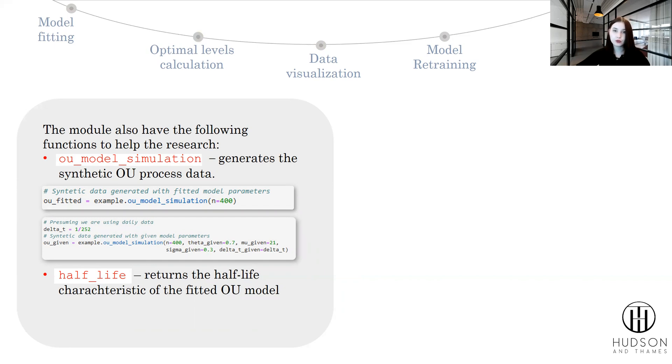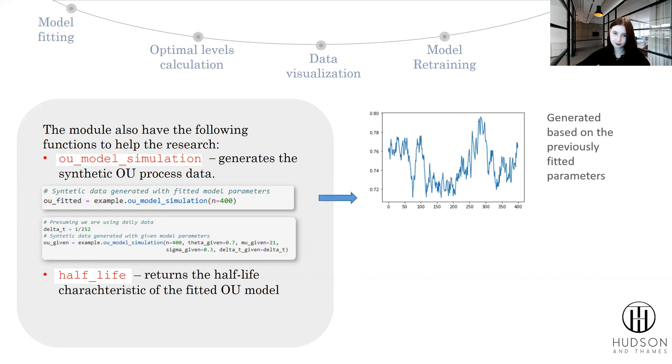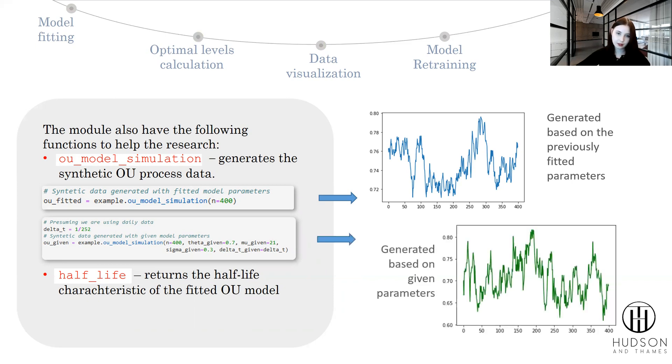The first way, if you don't specify your own parameters, it will choose the parameters of already fitted OU process to your given data as parameters to use to simulate the number of values that you would like to get. The second way is to set all the parameters of the OU model by yourself and get your custom OU process ready.